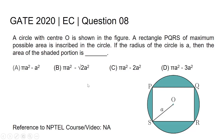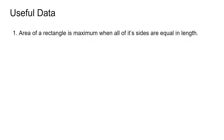This is a 2020 Electronics and Communication Engineering question number 8. A circle with center O is shown in the figure. A rectangle PQRS of maximum possible area is inscribed in the circle. If the radius of the circle is a, then the area of the shaded portion is: option A: πa² − a², option B: πa² − √2 a², option C: πa² − 2a², option D: πa² − 3a².